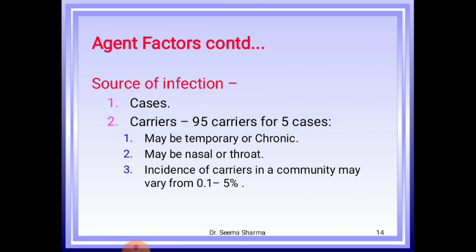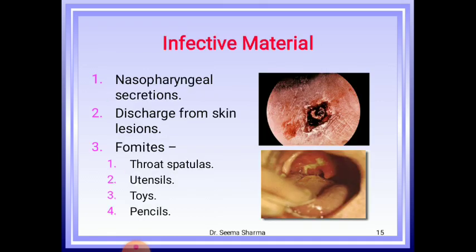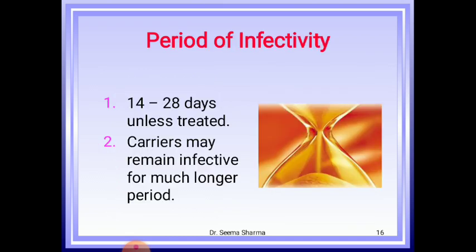Nasal carriers are more dangerous because of frequent shedding of infective material. The temporary carrier stage may last for about 1 month, but the chronic carrier stage may persist for a year or so unless the patient is treated. Infective material is nasopharyngeal secretion, discharge from skin lesions, or fomites. Fomites are inanimate substances — other than water and food — contaminated by infectious discharges, capable of transferring the infectious agent; examples include throat spatula, utensils, toys, or pencils. Period of infectivity ranges from 2 to 4 weeks or unless treated; carriers may remain infective much longer.